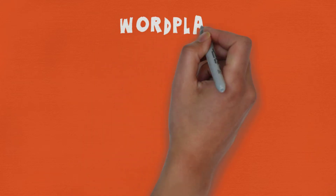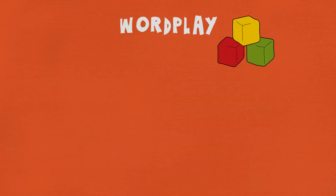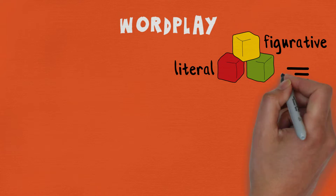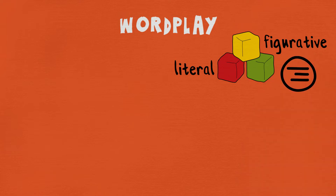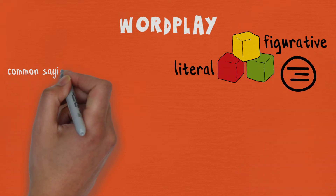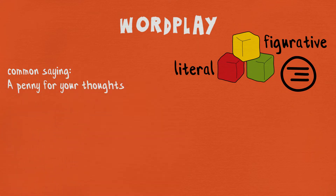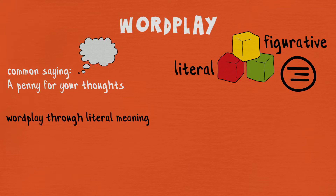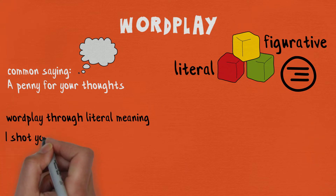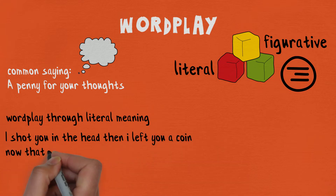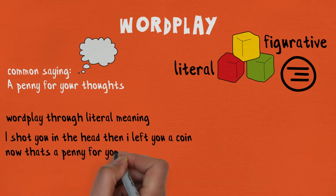Wordplay is very simple — the main idea is to play with literal and figurative meaning. The magic comes from the context. So if you first think of a common saying such as 'a penny for your thoughts,' what we mean by that is 'tell me what you're thinking.' However, wordplay comes when you see the literal meaning. In our case it could be: 'I shot you in the head then I left you a coin — now that's a penny for your thoughts.'